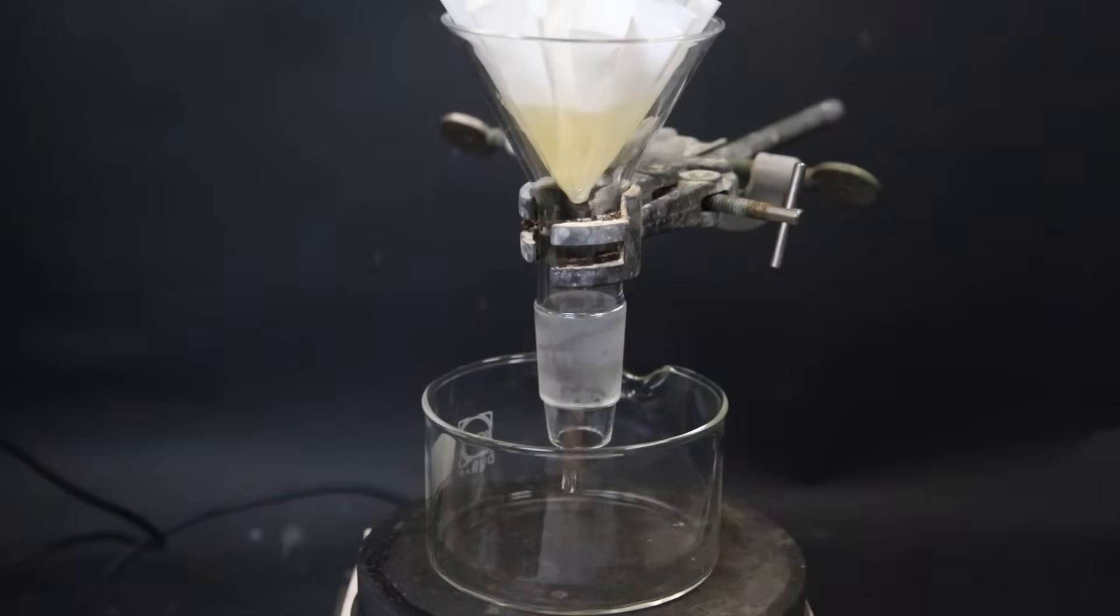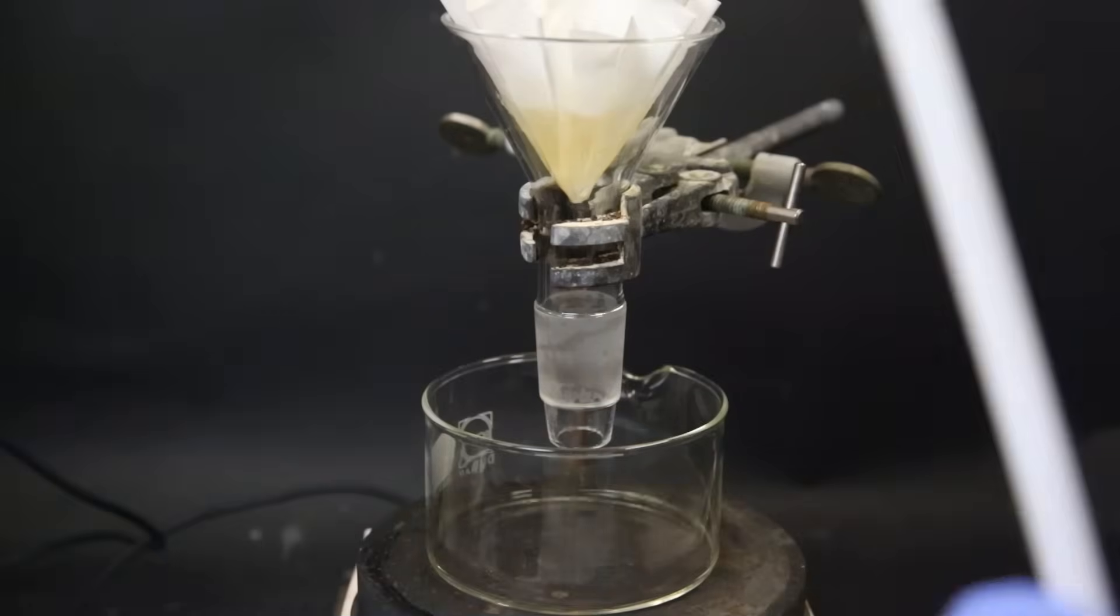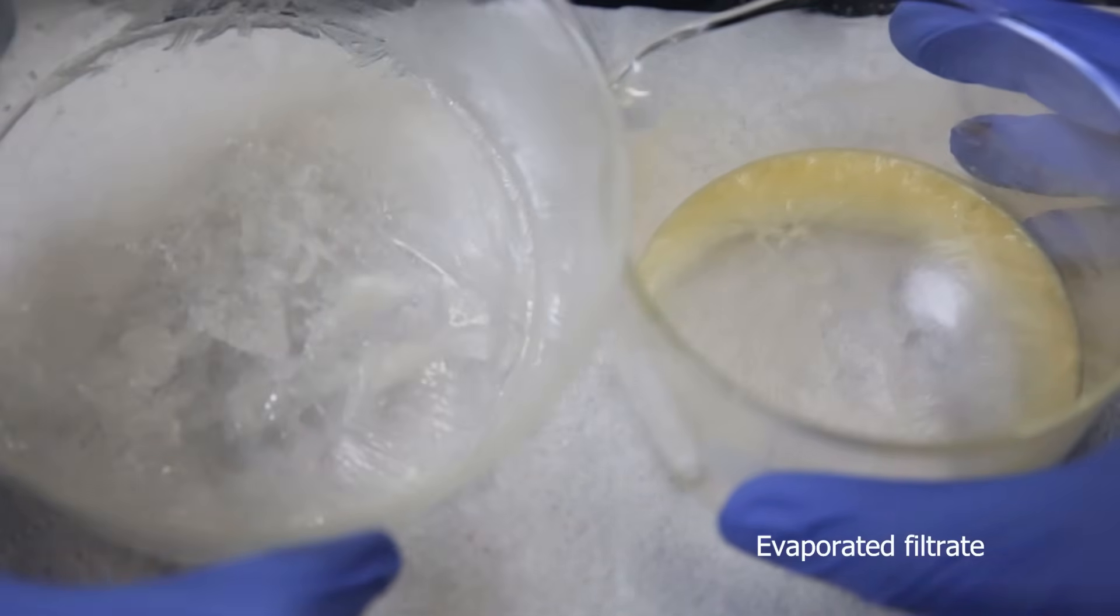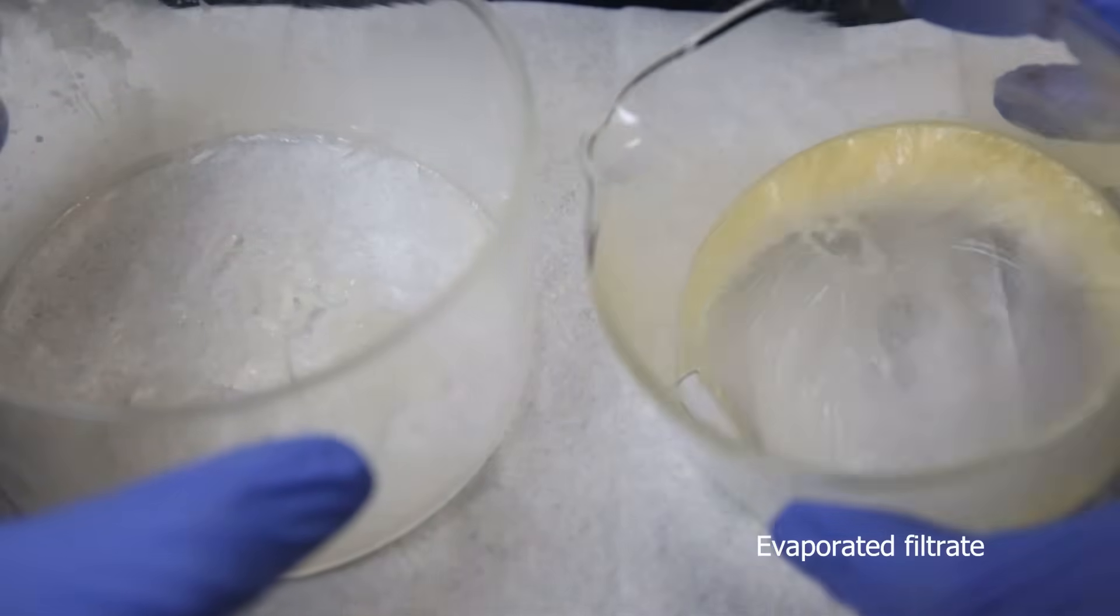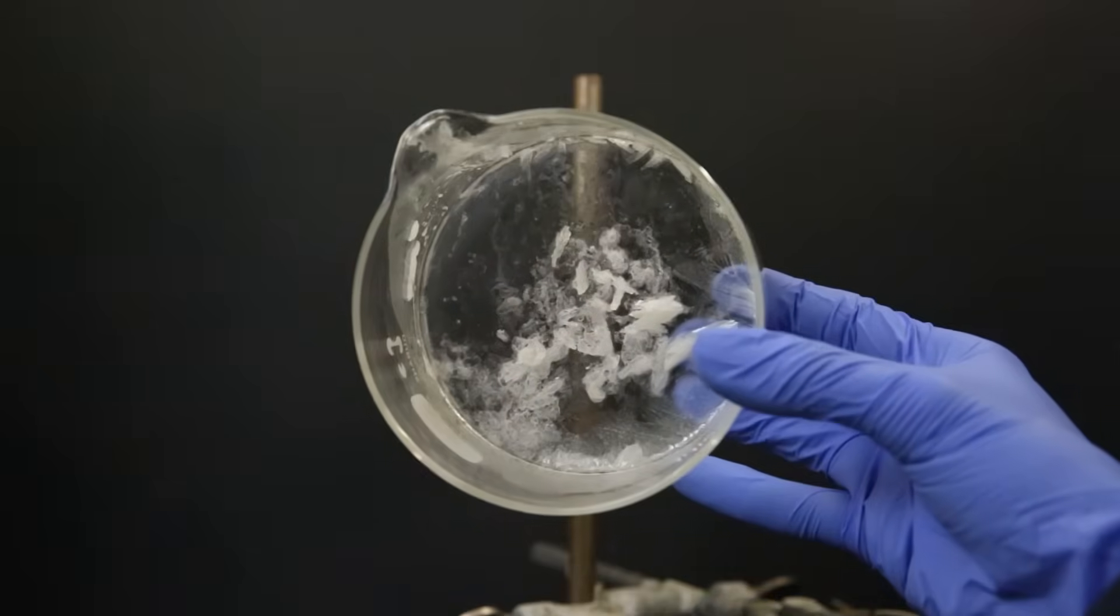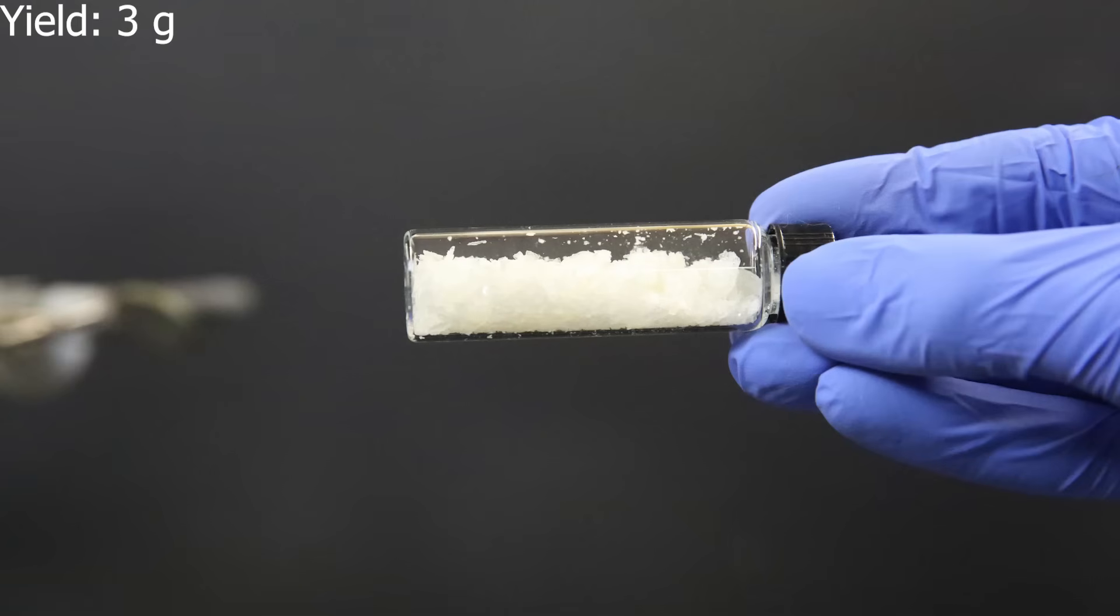I then filter all of the crystals out with gravity filtration and put it into another dish. Now on the left I have the relatively pure crystallized bipyridine, and on the right some impure yellow bipyridine. So I discarded the yellow bipyridine and put the white one into a vial. And the yield turned out to be 3 g.